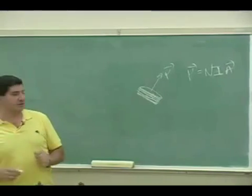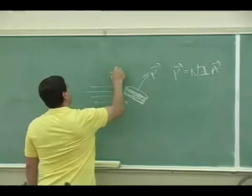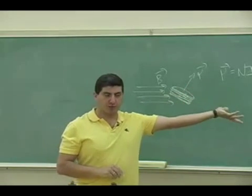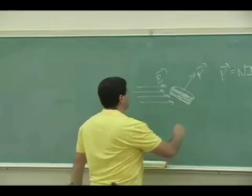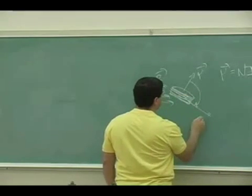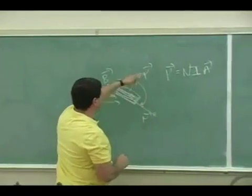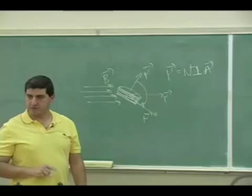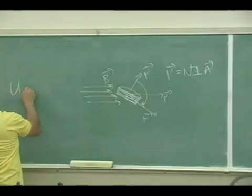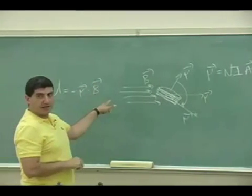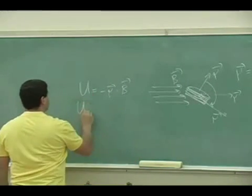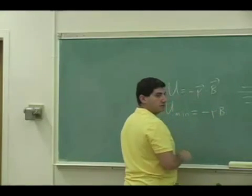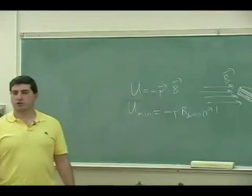If I turn on a magnetic field, the same thing happens as with the electrical dipole: the coil is going to feel a torque, making it rotate down to alignment with the field and oscillate back and forth. The lowest potential energy it can have is when it's aligned with the magnetic field. That's why the potential energy is negative mu dotted into B — when aligned, U minimum equals negative mu B cosine of zero, which equals negative mu B.